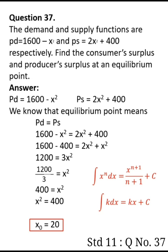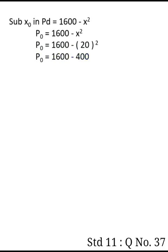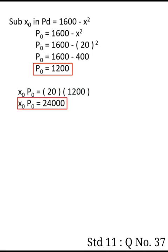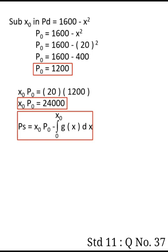Now substituting x value of 20 into the demand function: p naught equals 1600 minus 20 square, which equals 1600 minus 400, equals 1200. So x naught times p naught equals 20 times 1200, which equals 24,000.